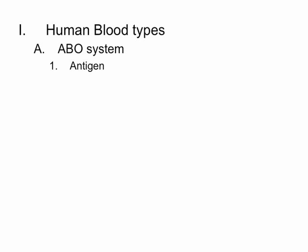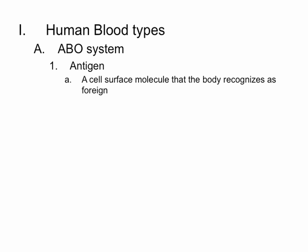The way we determine what type of blood you have is regarding the antigens that you have on the surface of your blood cells. By definition, an antigen is a cell surface molecule that the body recognizes as foreign, or in this case, you would also have antigens on your cell surfaces that the body recognizes as self.